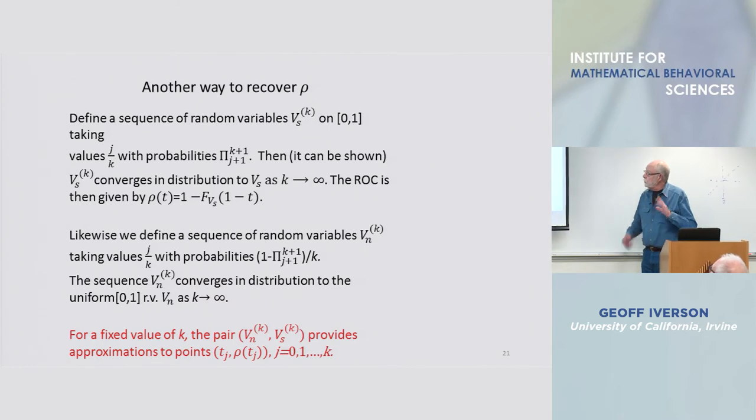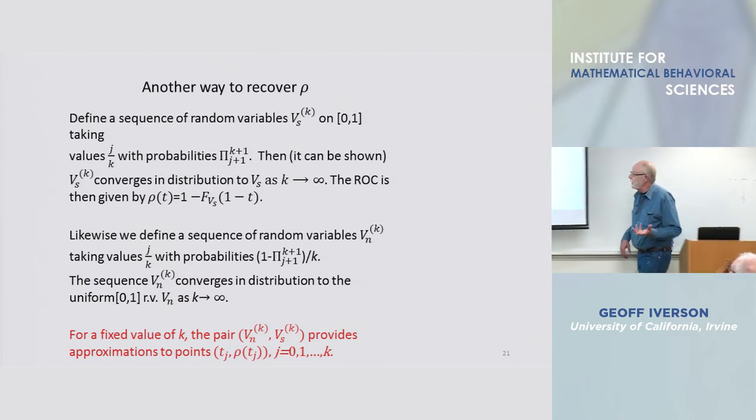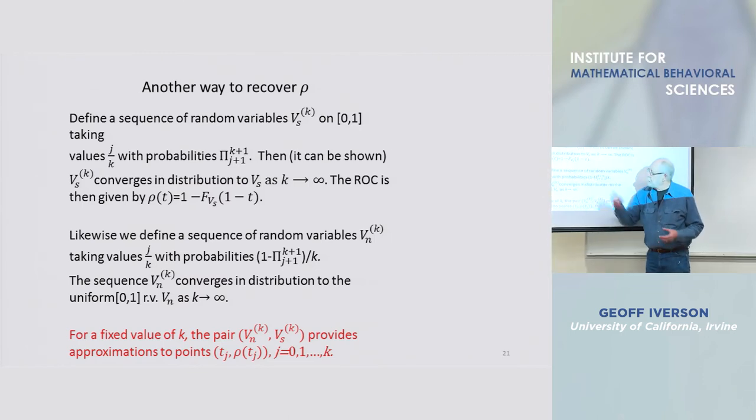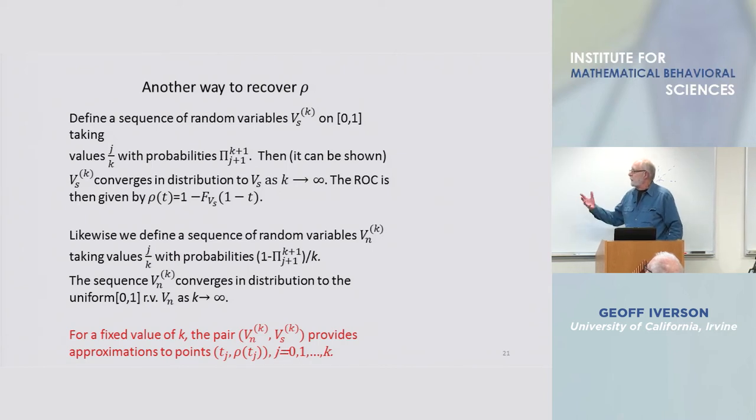And you can show, on the basis of information that was on an earlier slide, that this sequence of random variables, with the ranking probabilities determining their distribution, that sequence converges in distribution, converges in law to the yes-no variable V_S. Once you have that, you can simply write down rho.